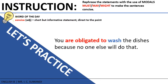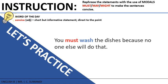Now let's reinforce what you've learned. We'll rephrase sentences by replacing the red words with proper verb modals — must, may, or might — to make the statements short and concise. First: 'You are obligated to wash the dishes because no one else will do that.' The verb modal here is must, since it's an obligation: 'You must wash the dishes because no one else will do that.'